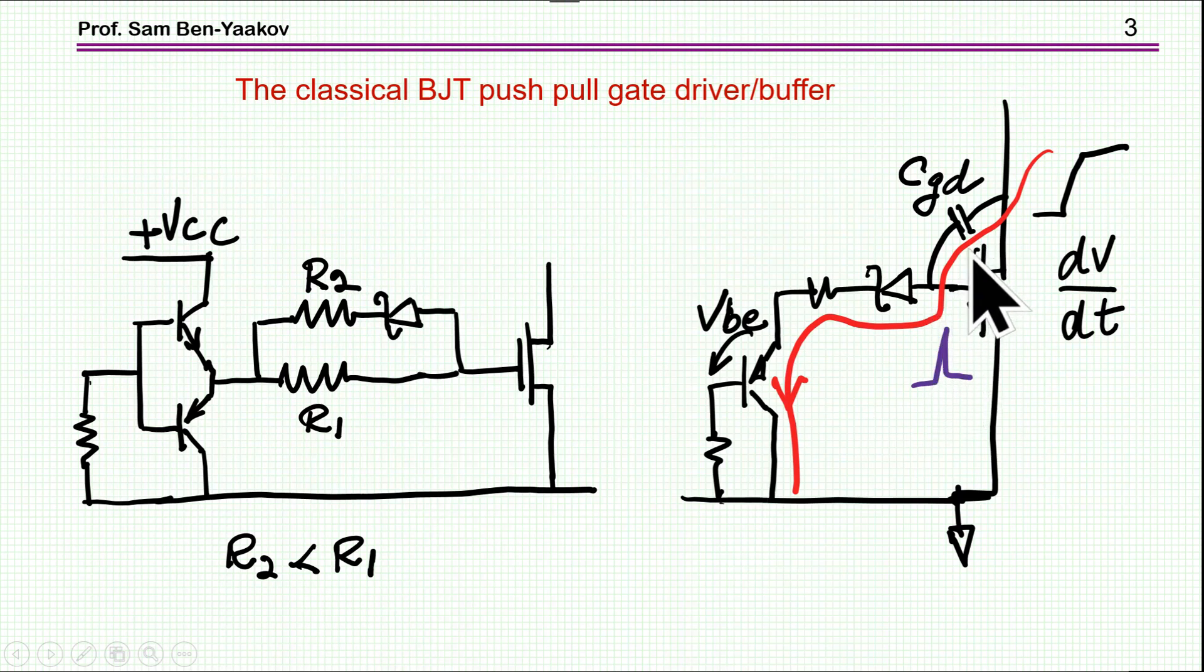Because if we have this so-called Miller spike, due to a dV/dt at the drain, there is a current coming through this CGD capacitor passing through here, and we might have a voltage spike, which is riding on these voltage drops, and consequently, the transistor might actually enter into conduction. So this is one of the disadvantages of the BJT transistor push-pull buffer.